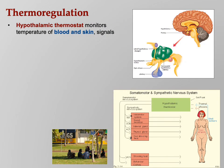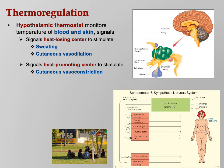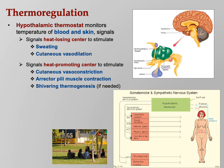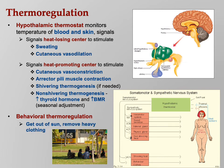The hypothalamic thermostat monitors temperature of blood and skin and signals the heat-losing center to stimulate sweating and cutaneous vasodilation — bringing blood to the surface to let the air cool it down. The heat-promoting center triggers cutaneous vasoconstriction to clamp blood vessels down so you don't cool your blood. Erector pili muscle contraction raises the hairs — doesn't work very well for humans, but works for dogs. Shivering also helps: muscle contractions make ATP, and heat is a byproduct of ATP production. Non-shivering thermogenesis involves thyroid hormone increasing BMR and raising body temperature. And behavioral thermoregulation: if you're hot, get out of the sun and take off extra clothing.